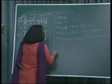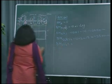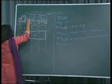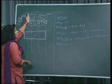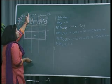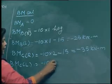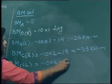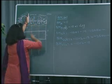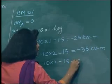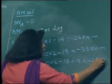Bending moment at point C just left — put your hand on this section line and see on the right side. We have one vertical force and two couples. So first is minus 10 into 2, second is minus 15, and third is plus 15. The net will be equal to minus 20 kilo Newton meters.